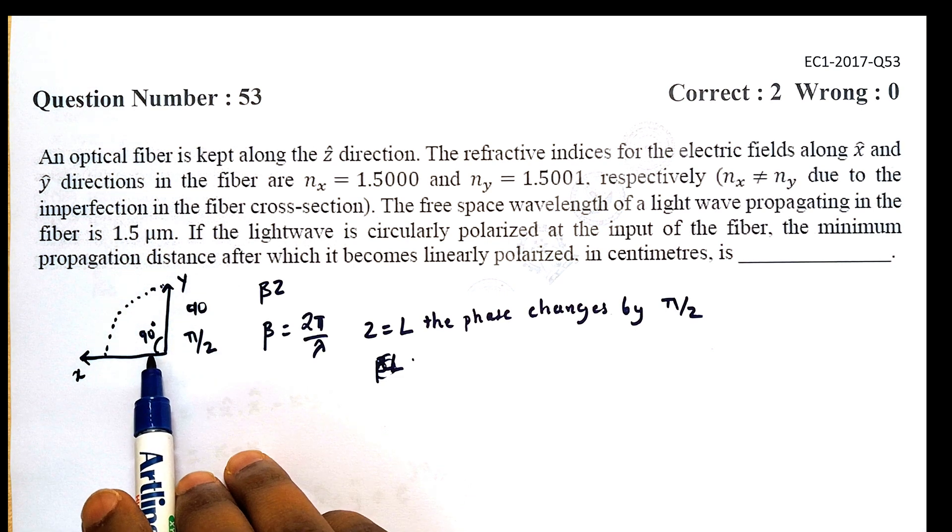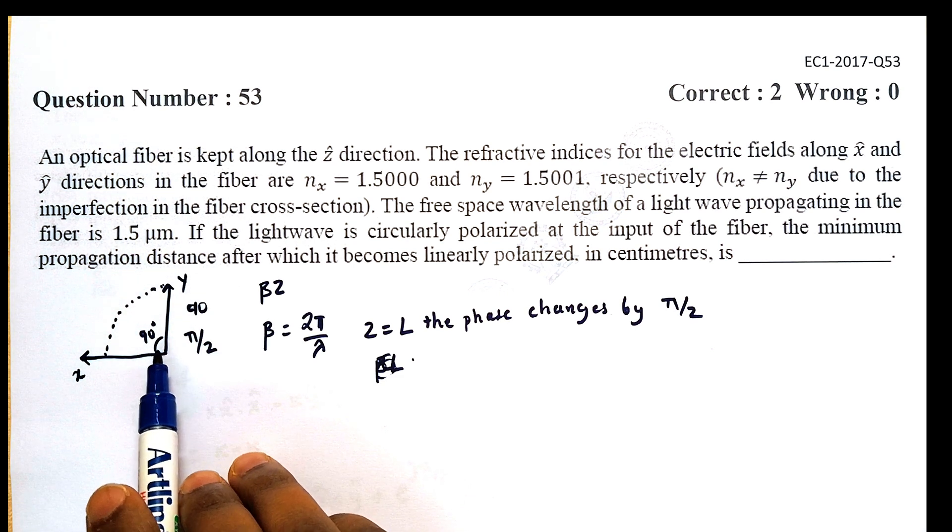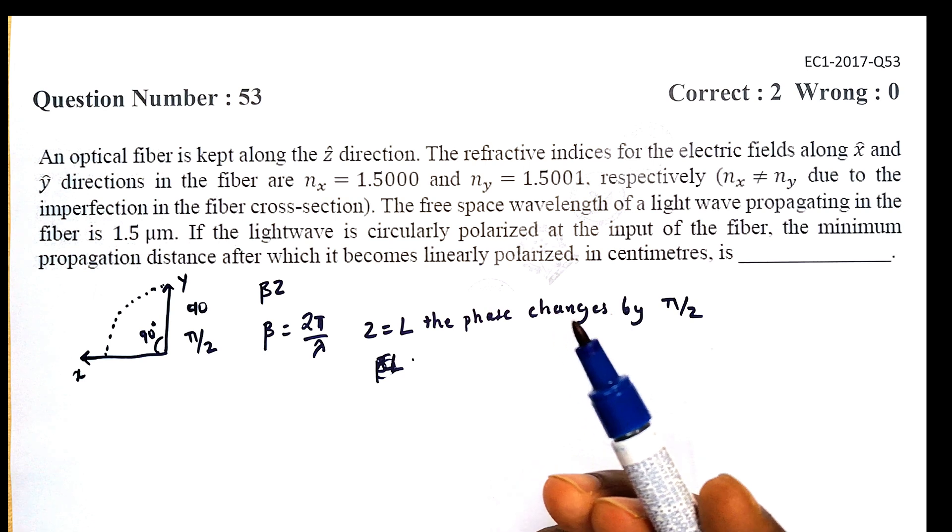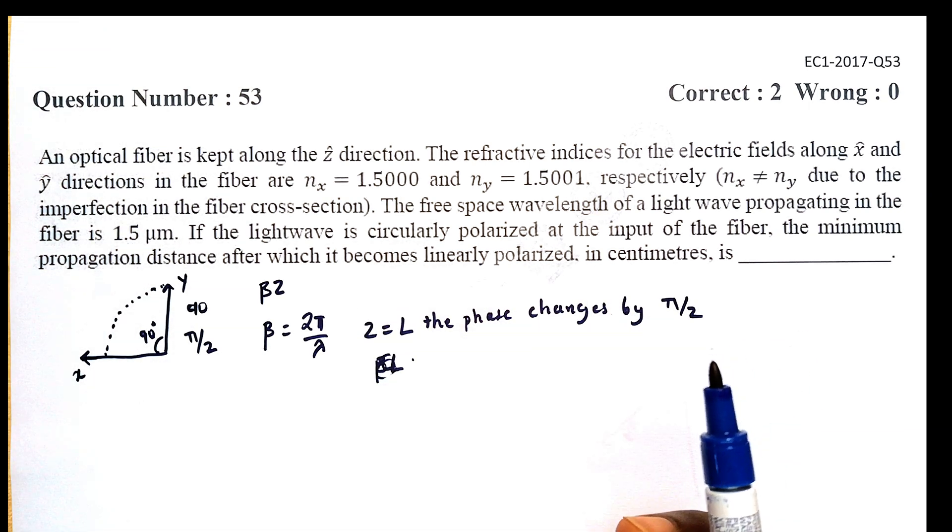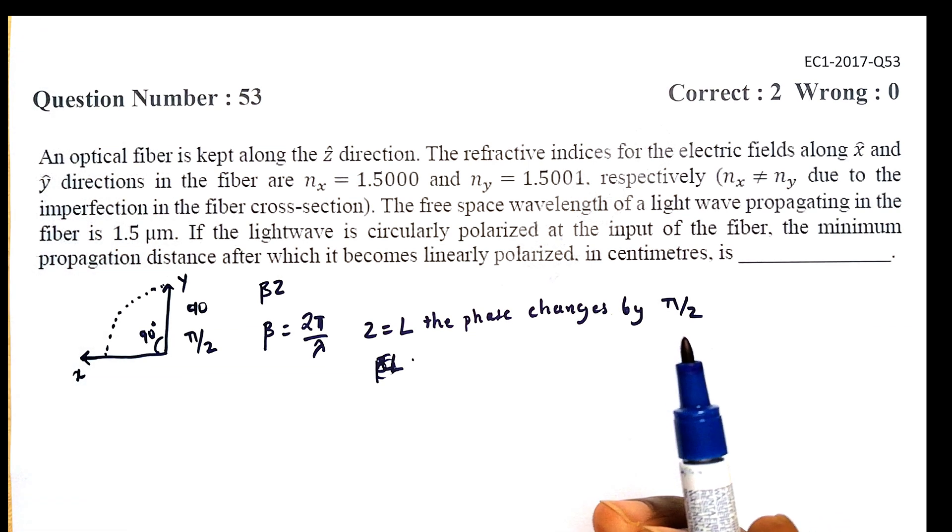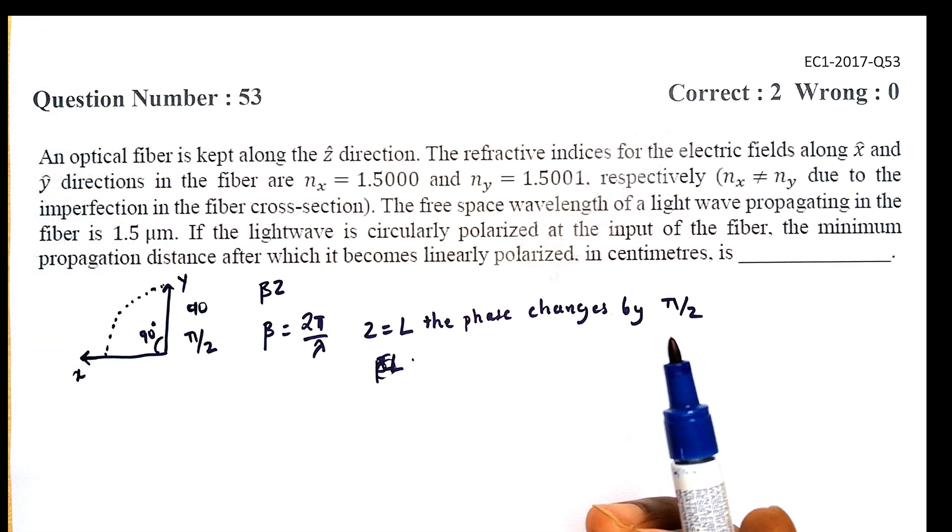different electric field components will gain different phase values as they propagate along the fiber, and this leads to phase change. So at a distance of L, there is a phase change of π/2.